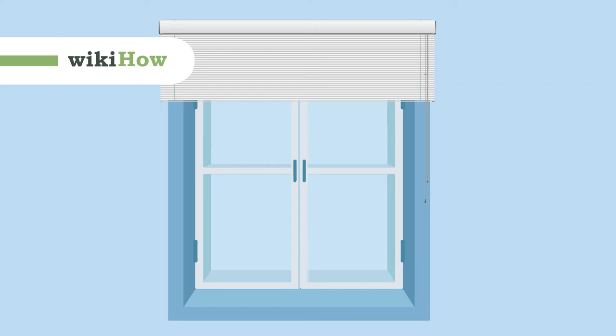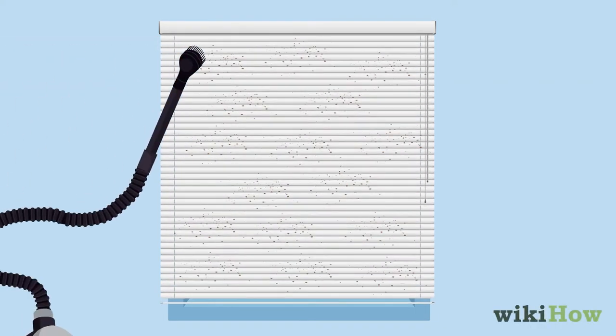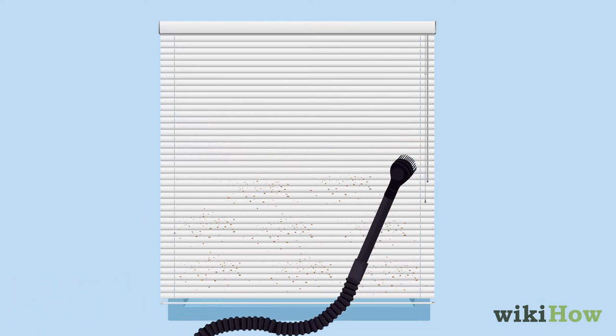To clean mini blinds, first close the blinds and go over them with the brush attachment of a vacuum cleaner to remove loose dust.